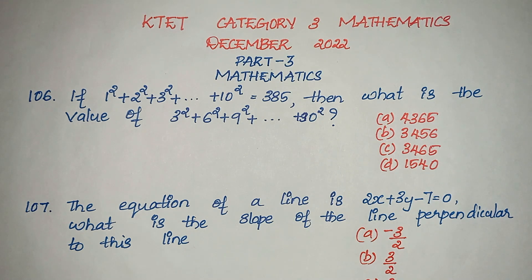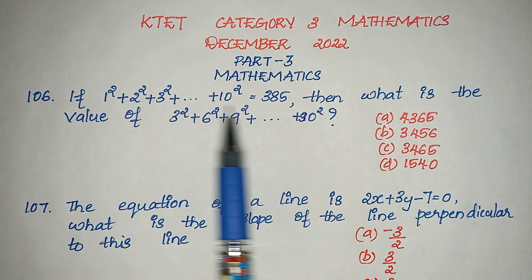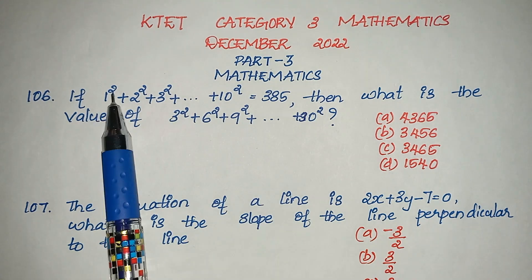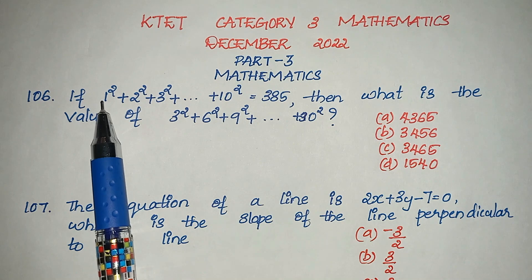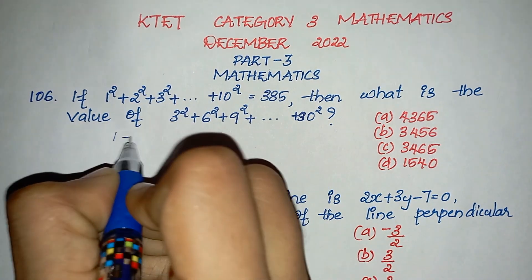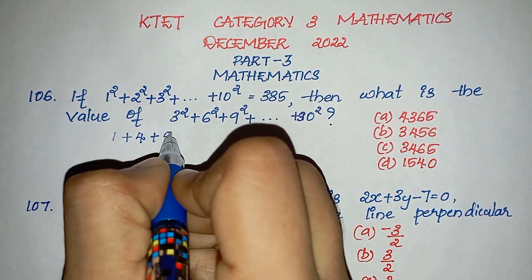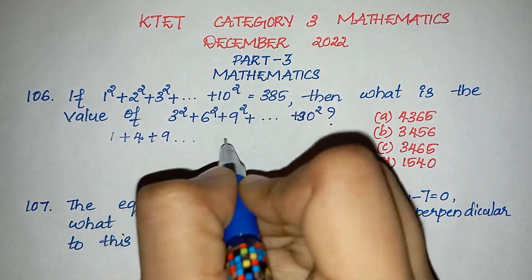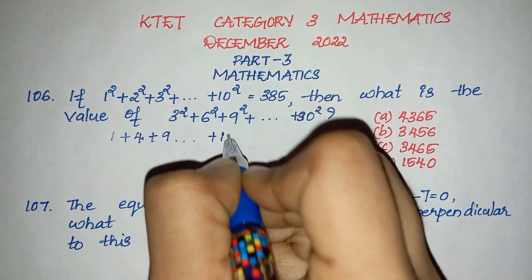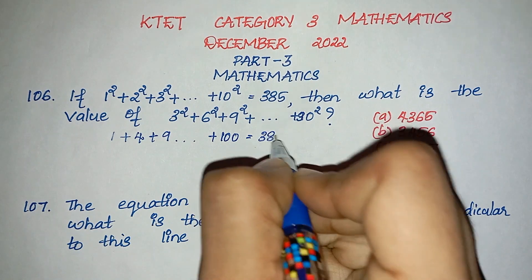If this question is directly solved, we have one shortcut. We have a sum: 1 square plus 2 square plus 3 square plus 4 square plus 9 square plus 10 square is equal to 385.